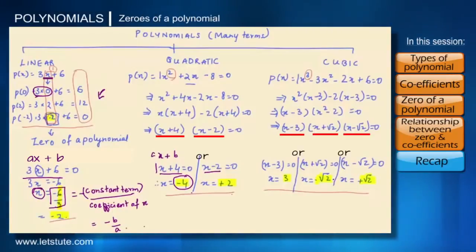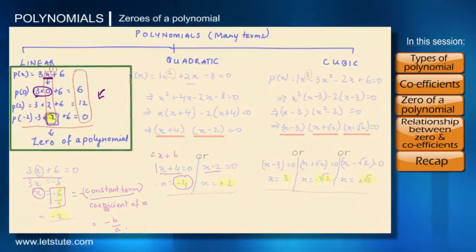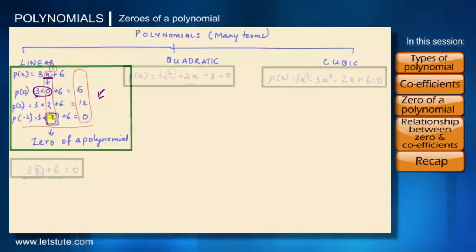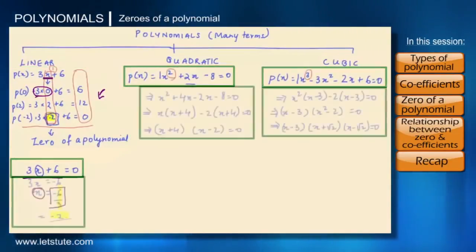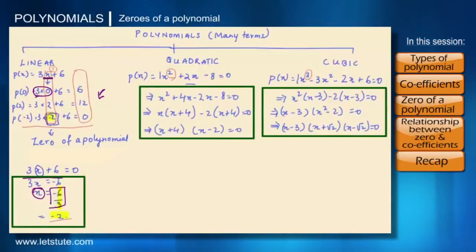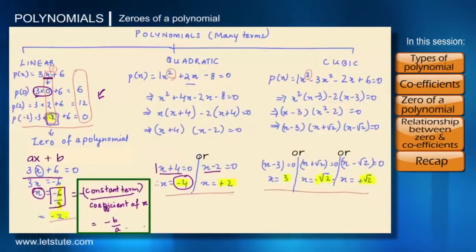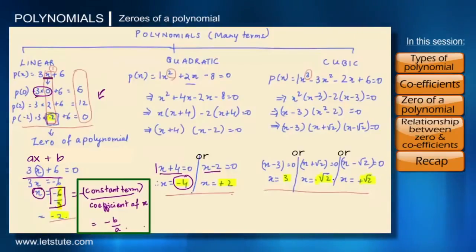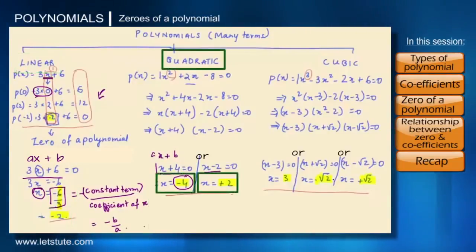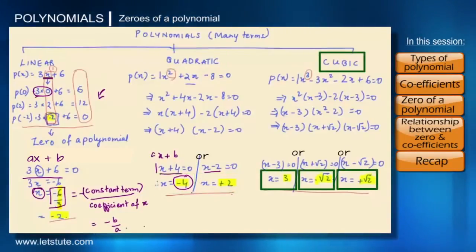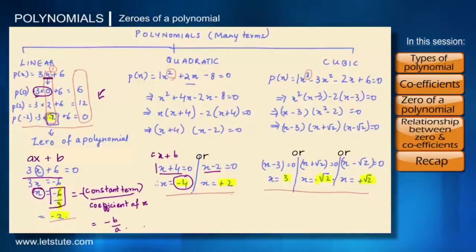Let's have a quick recap of what we've studied so far. We know what the zero of a polynomial is, how to find the zero by equating it with zero and then factorizing it. Then we saw the relation between zeros and coefficients of a linear polynomial, that is minus b upon a. A linear polynomial can have only one zero, a quadratic can have a maximum of two zeros, and a cubic polynomial can have a maximum of three zeros.